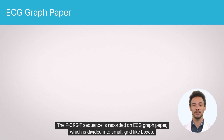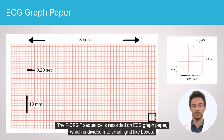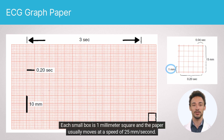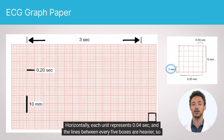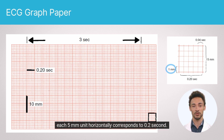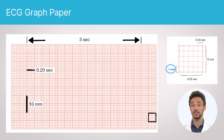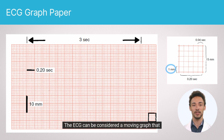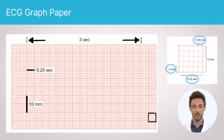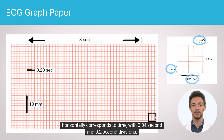The P-Q-R-ST sequence is recorded on ECG graph paper, which is divided into small, grid-like boxes. Each small box is 1 mm², and the paper usually moves at a speed of 25 mm per second. Horizontally, each unit represents 0.04 seconds, and the lines between every 5 boxes are heavier, so each 5 mm unit horizontally corresponds to 0.2 seconds. The ECG can be considered a moving graph that horizontally corresponds to time, with 0.04 second and 0.2 second divisions.